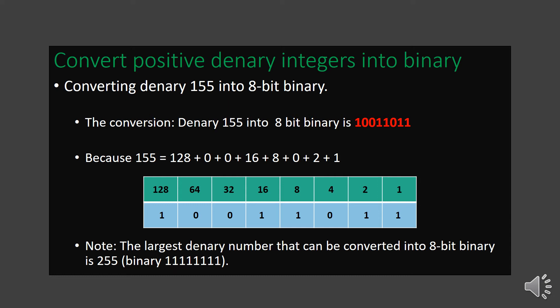To cross-check, we take the binary powers of 2 and add up wherever 1s appear: 128, 16, 8, 2, and 1. Adding these gives 155, confirming the conversion is correct. One important thing to remember is that using an 8-bit binary number system, the highest decimal value we can convert is 255. Beyond 255, we need to use 12-bit or 16-bit binary to convert higher decimal values.